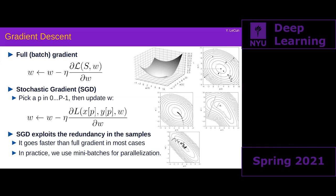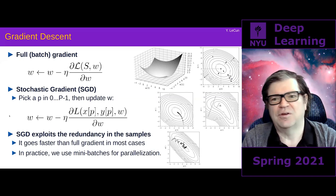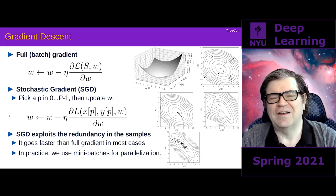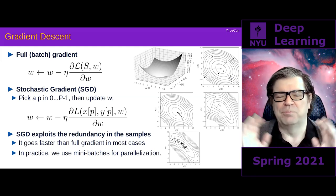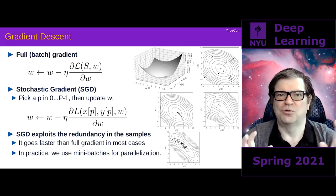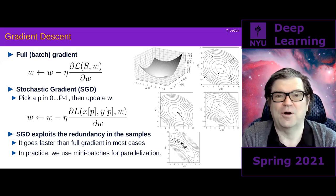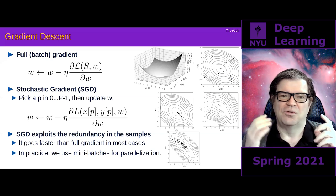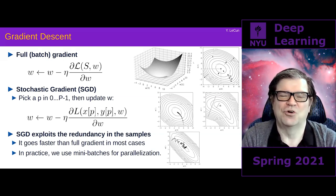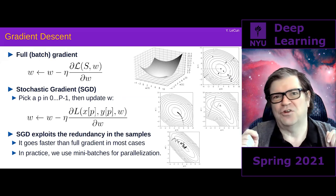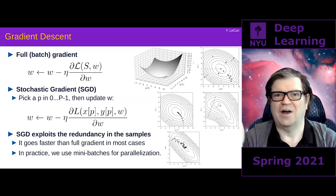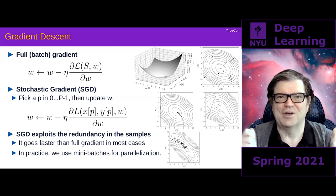How doesn't SGD get stuck in local minima? It does. Full gradient descent does get stuck in local minima. SGD gets slightly less stuck because it's noisy, allowing it sometimes to escape local minima. But the real reason local minima are not such a huge problem is that there aren't that many local minima that are traps. We're going to build neural nets where the parameter space is so high-dimensional that it becomes very hard for the system to actually create trapping local minima.